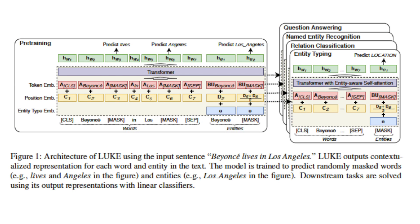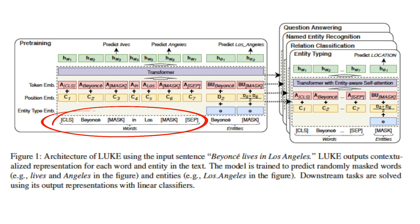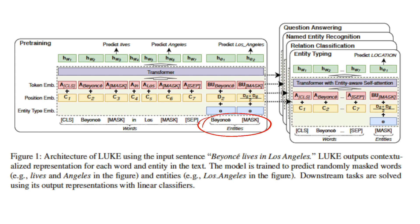First, we have the input representation, which is computed using three types of embeddings. The first type is token embeddings, which represent the token — either words or entities — giving us word token embeddings and entity token embeddings. The second type is positional embeddings, which represent the position of a token in the word sequence. The third type is entity type embeddings, which represent that the token is an entity. The input representation of a word is computed using token embeddings plus positional embeddings. The input representation of an entity is token embeddings plus positional embeddings plus entity type embeddings.